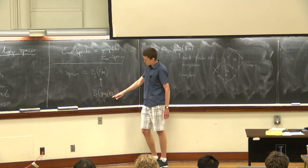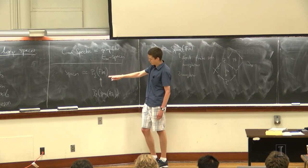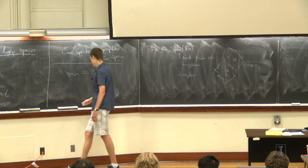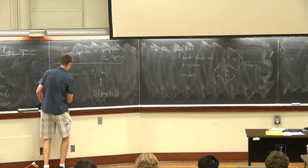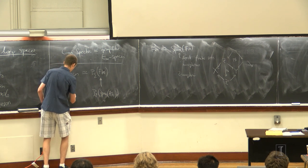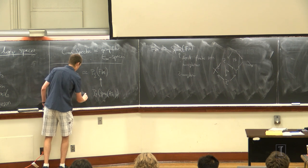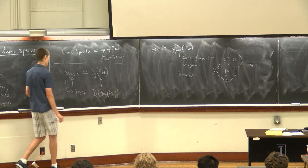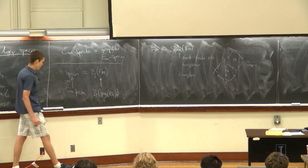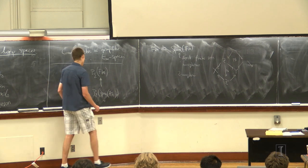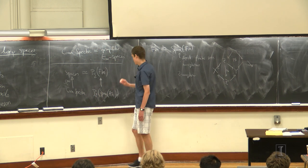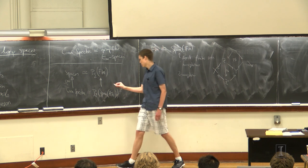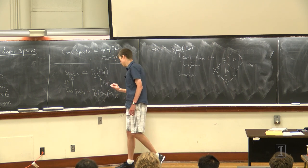If I have any infinity space and I just forget the infinity structure to get an ordinary space, it's just restriction along this embedding. A more precise form of this statement is: I have the infinity category of connective spectra, which forgets to spaces via omega-infinity. These are not quite equivalent — I have to put the group-like condition here. And then we have an equivalence, where this functor is just a forgetful functor.